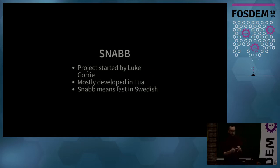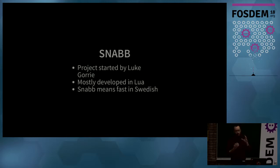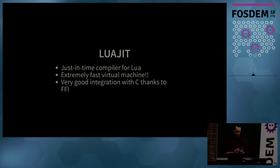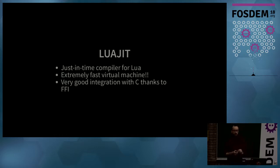SNAP is fast because network functions are written in Lua, which can be faster than coding in C. It's very easy to go from idea to code to production with SNAP. It's also fast because it runs on top of LuaJIT, a just-in-time compiler for Lua. LuaJIT is regarded as one of the fastest virtual machines available, and it has very good integration with C through a foreign function interface that is only available in LuaJIT, not standard Lua.